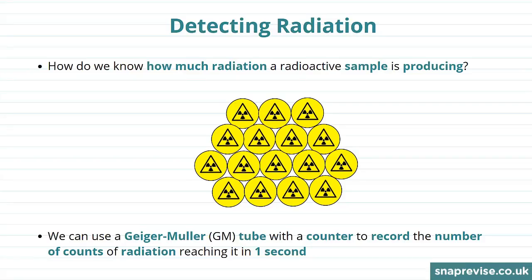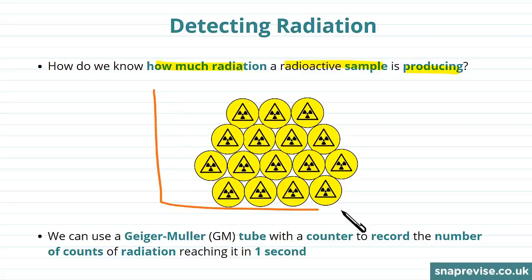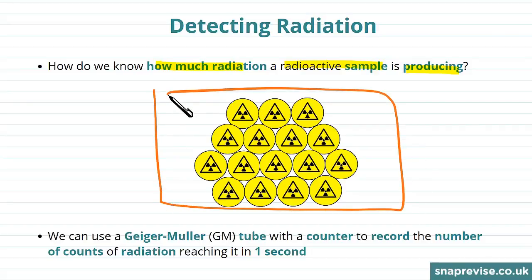So let's start by talking about how we detect radiation. We want to know how much radiation a radioactive sample is producing. If we have a sample with more radioactive atoms, it's going to produce more radiation. But we also want to know how quickly the radiation is being produced. Given enough time, all of these unstable atoms will decay, but some unstable atoms might decay quicker than others. So the quantity we're interested in is how many decays occur per second.